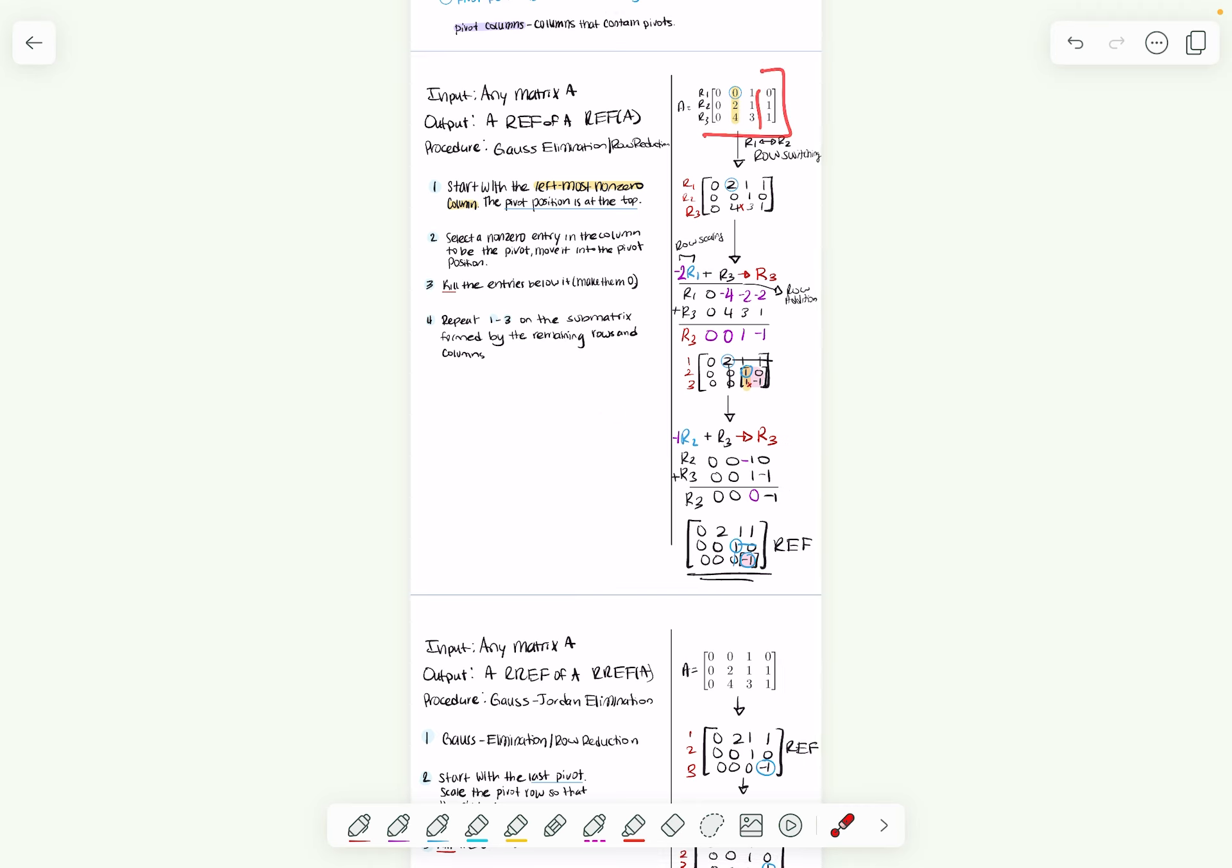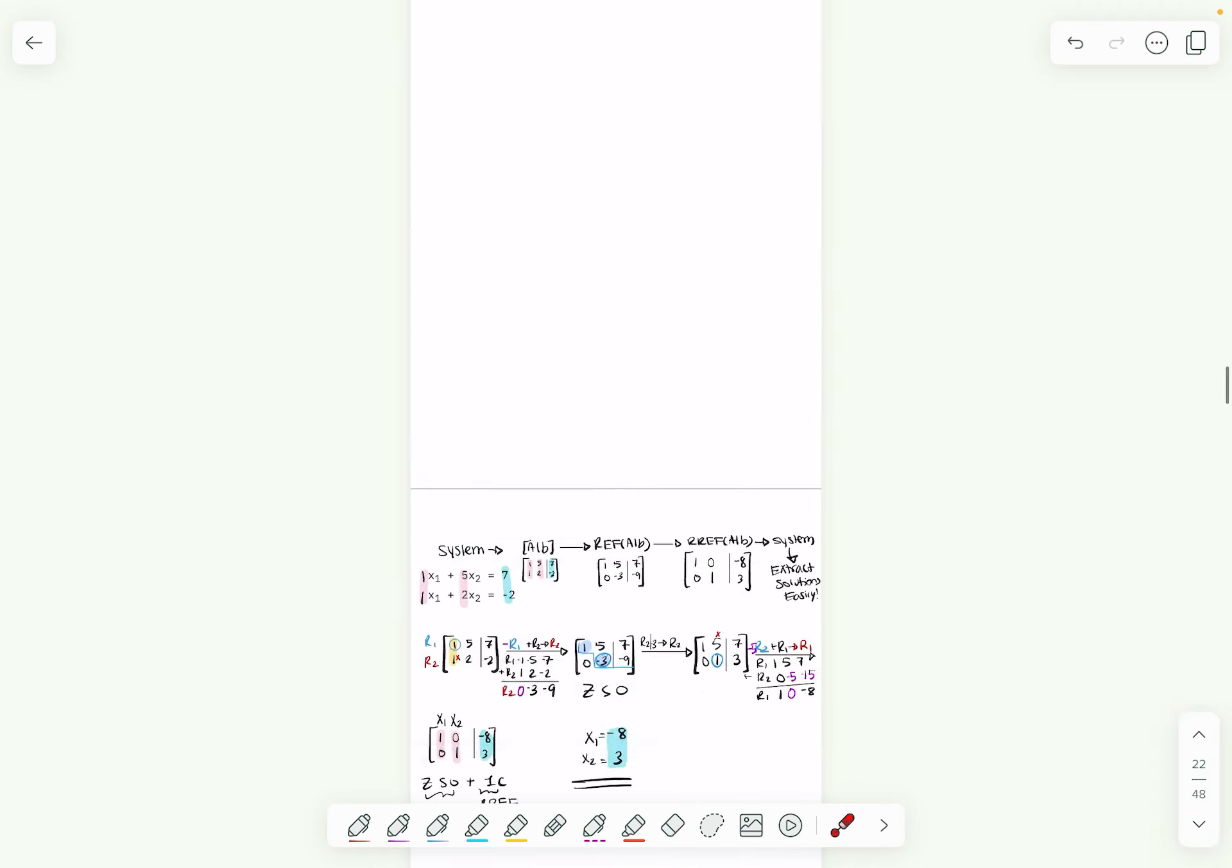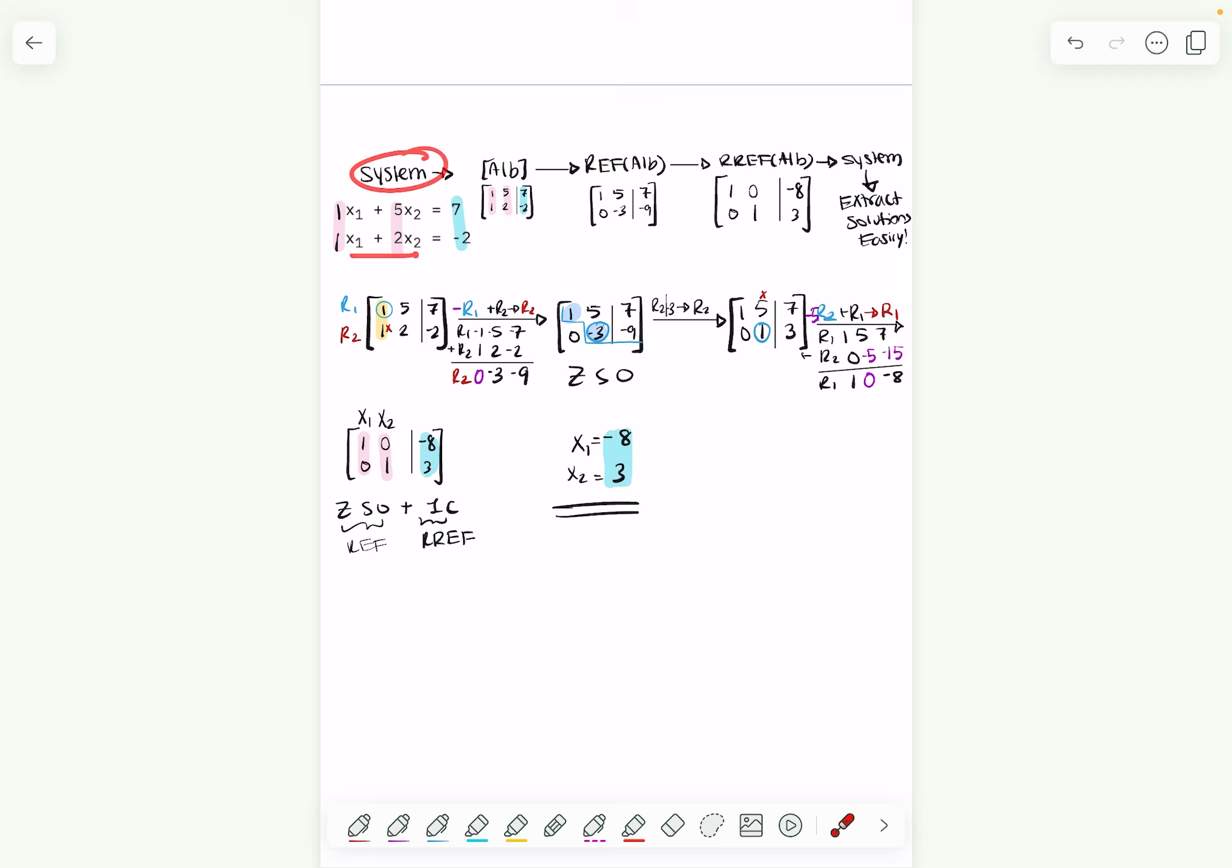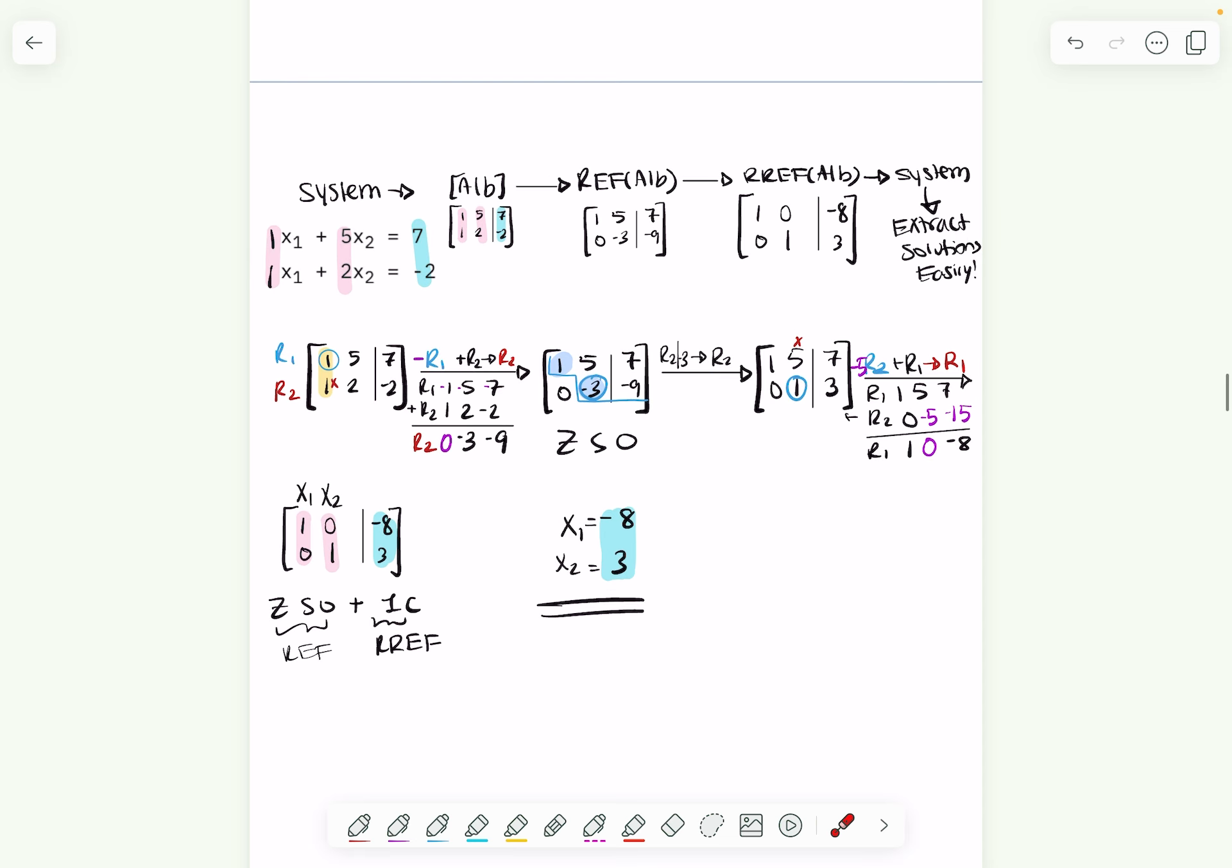That would be your augmented matrix. So in some future videos I say, okay, you're given a system, rewrite it into the augmented matrix. And then, because I was a little bit lazy, I just wrote row echelon form of the augmented matrix. But technically speaking, we're only doing row echelon form of matrix A, the coefficient matrix.